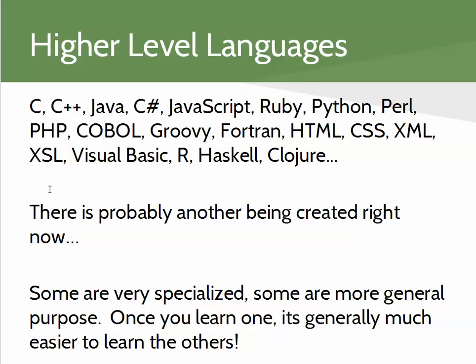We have many, many languages, just like we have many natural languages, and some are very specialized. Something like HTML only makes sense within the context of creating a web page, but languages like C++ and Java are extremely general purpose and can be used for virtually any purpose on a computer. The nice thing about programming is that once you learn to program in any one language, you'll be able to pick up the next language much more quickly. It's not like learning English and then trying to learn Spanish — it's more like learning English in the Northeast and then driving to the South and having a little difficulty with the dialect.